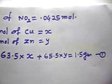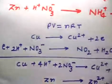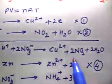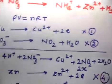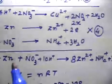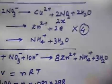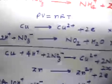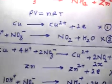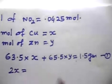The second equation comes from the moles of NO2. From the balanced equation, 1 mole of copper gives 2 moles of NO2, so X moles of copper gives 2X moles of NO2. Since NO2 only comes from the copper reaction (zinc gives NH4⁺, not NO2), total moles of NO2 = 2X.